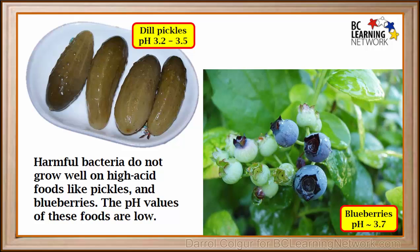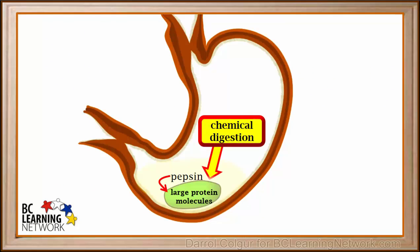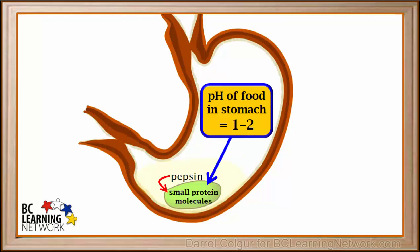pH levels are also important in our bodies. In our stomach, the enzyme pepsin speeds up the chemical breakdown of large protein molecules into small protein molecules. In order for the enzyme pepsin to work properly, the stomach must have a very low pH. While pepsin is working, the pH gets as low as 1 or 2.